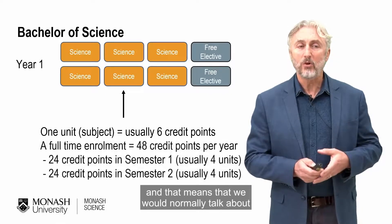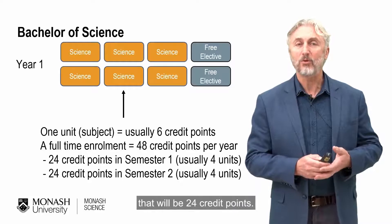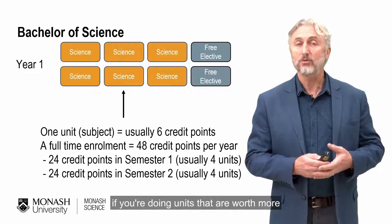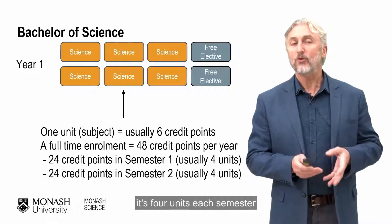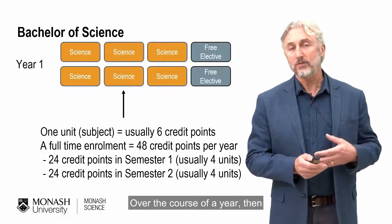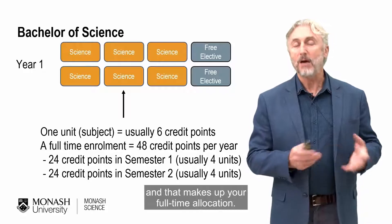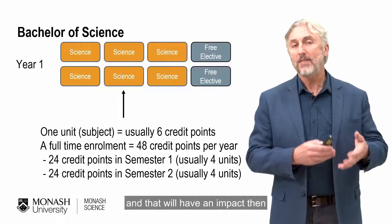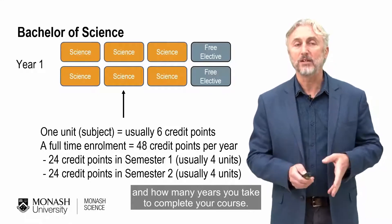We would normally talk about a full time load as four units, which would be 24 credit points. You might make up that 24 credit points in other ways if you're doing units worth more than six credit points, but for most people it's four units each semester. Over the course of a year, you do four units in semester one and four in semester two. If you're studying part time, the number of units will be lower, which will impact how many years you take to complete your course.